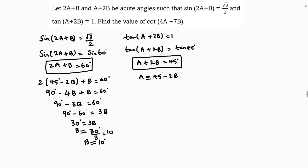Now substituting b = 10° back: a = 45° − 2×10° = 45° − 20° = 25°. So the value of a is 25°.